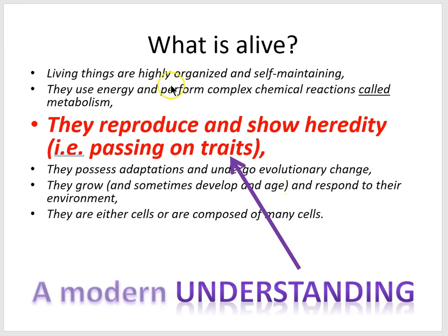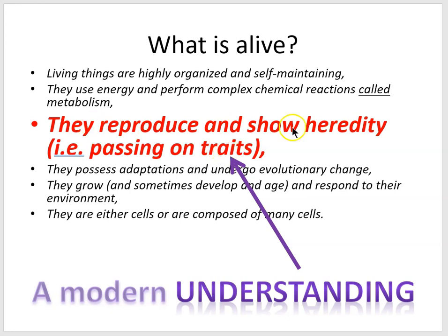In previous lessons, we learned about this list of characteristics that all living things share. And we also learned that this one here in bold — that living things reproduce and show heredity, which is passing on traits from parents to offspring — is a modern understanding.